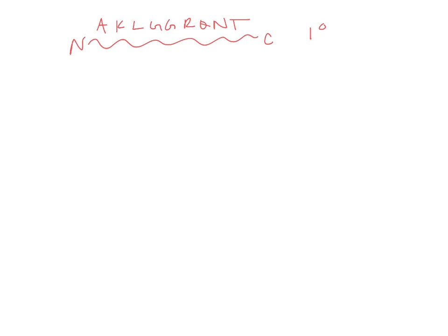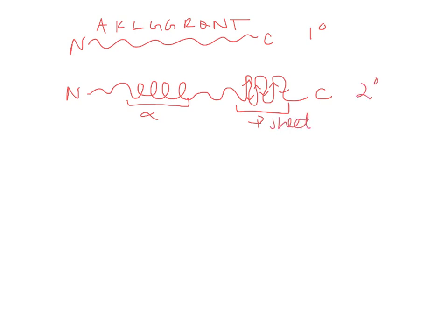When localized parts of the sequence begin to fold because of the sequence itself, this gives rise to secondary structure. So I'll just draw a couple of secondary structural elements here. This might be an alpha helix, and this might be, if I do arrows up and down every other one, this would be an anti-parallel beta sheet.